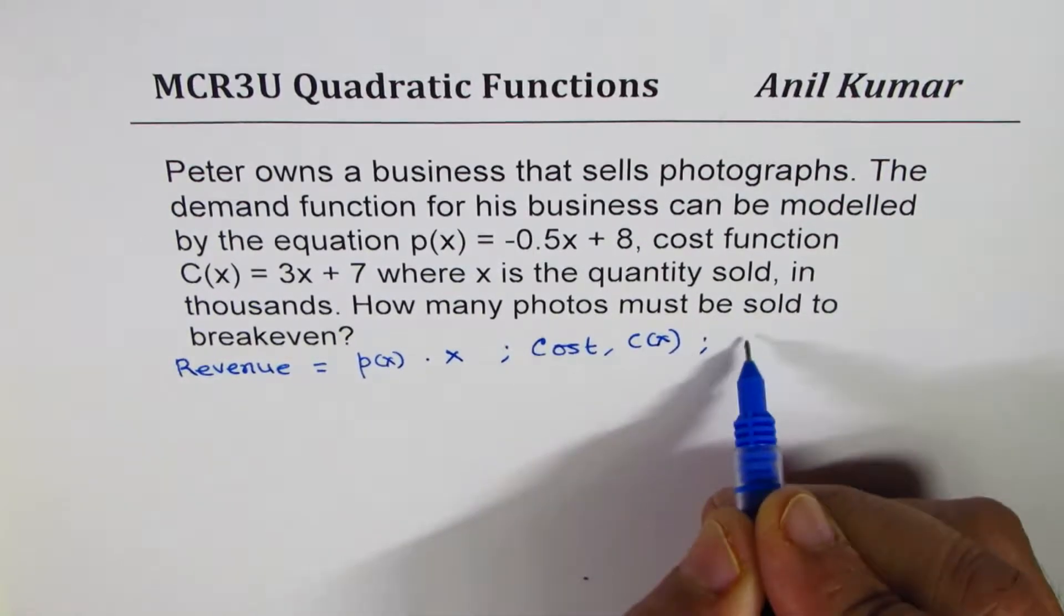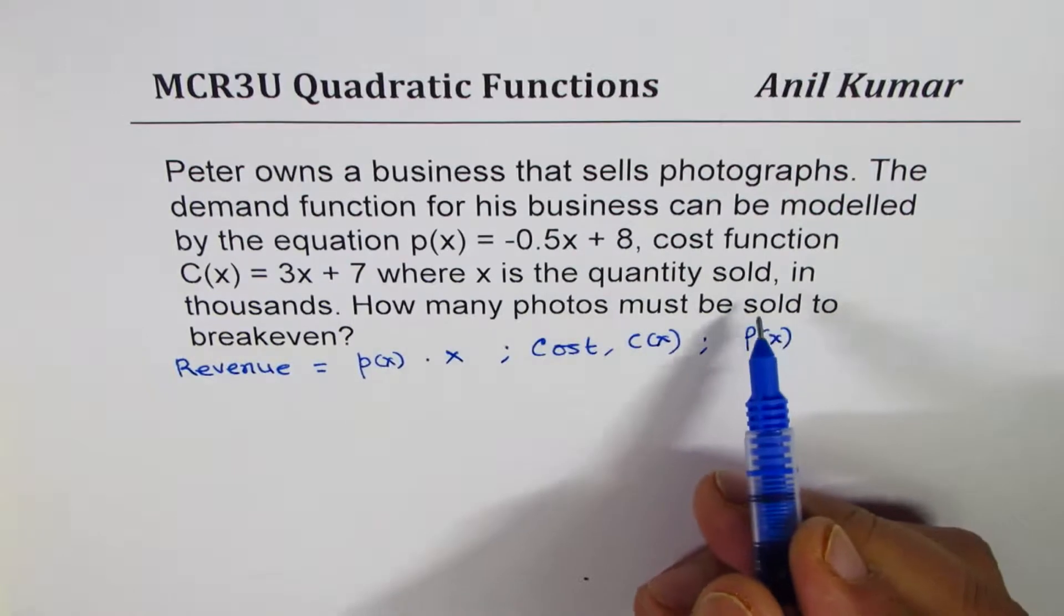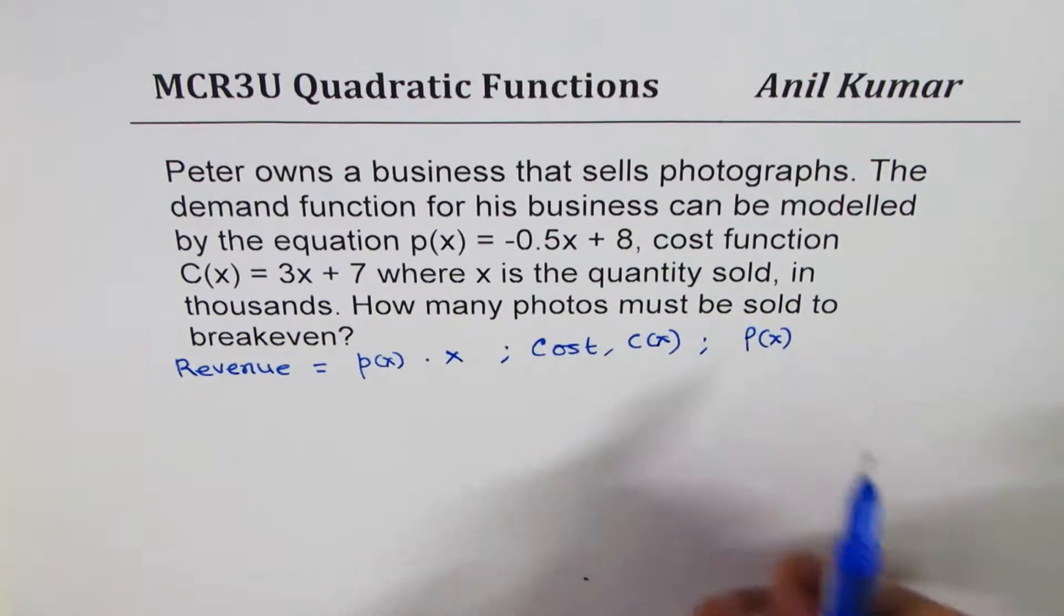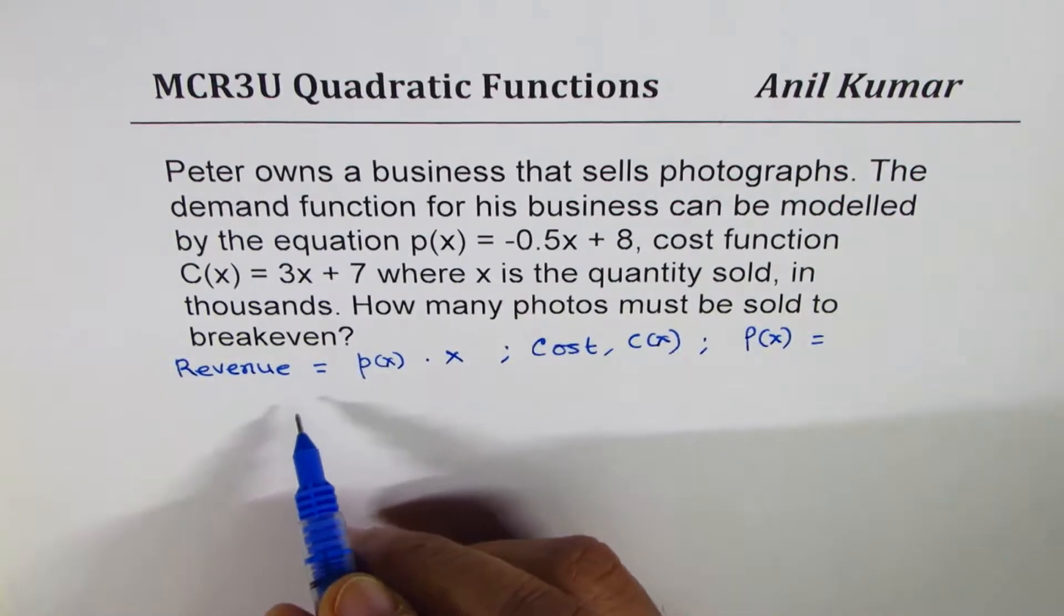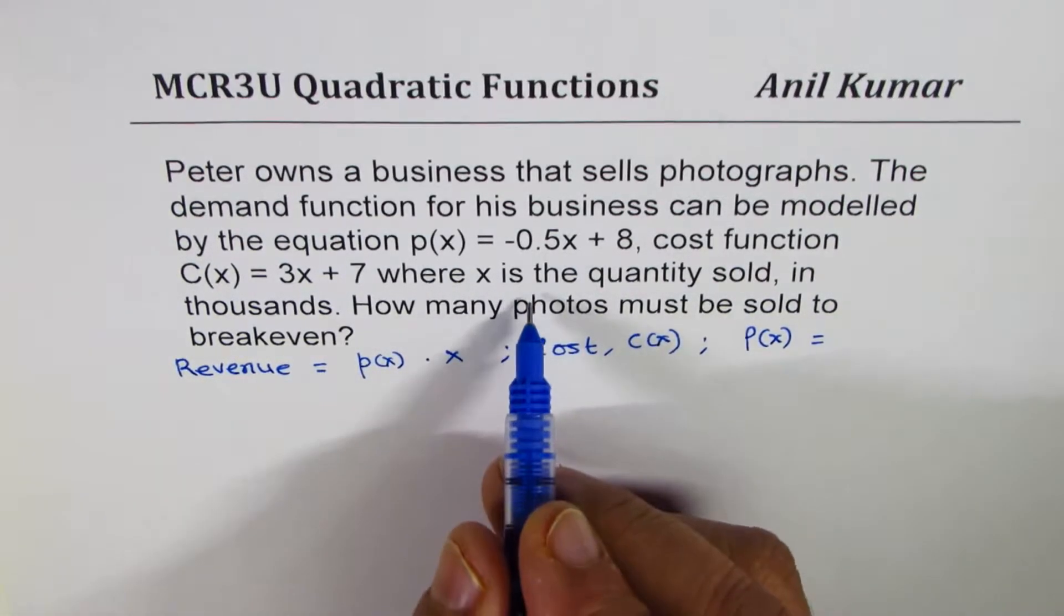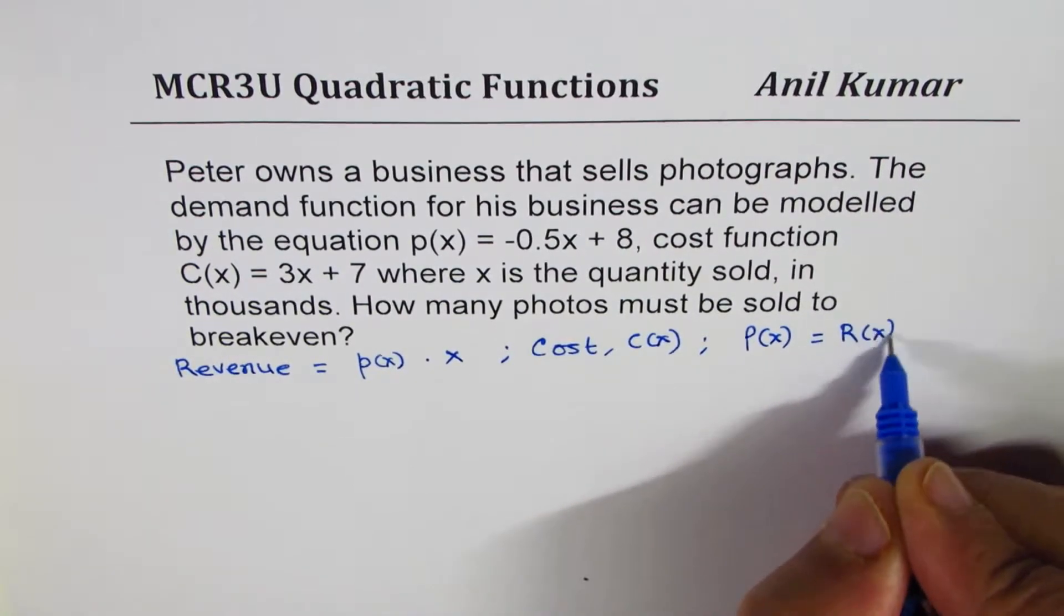Now profit, since we are talking about x, the items sold in thousands, profit in terms of x will be revenue, the money which you generate by selling these items, take away the cost. So it is revenue minus cost.